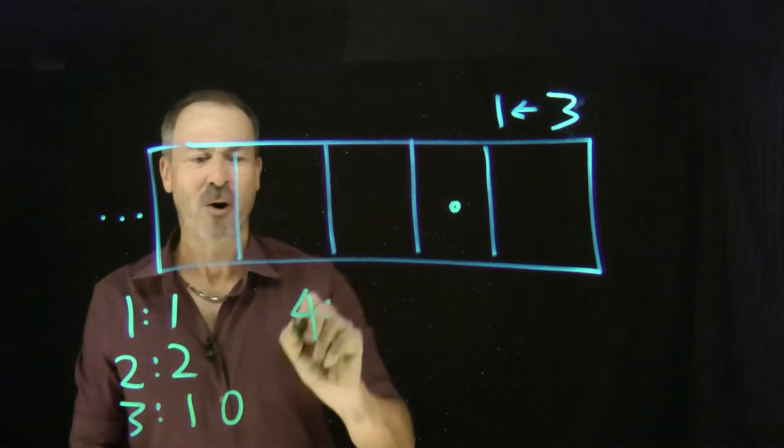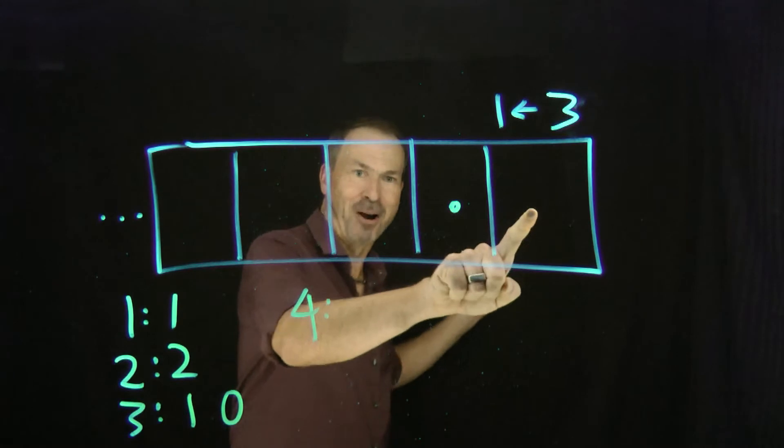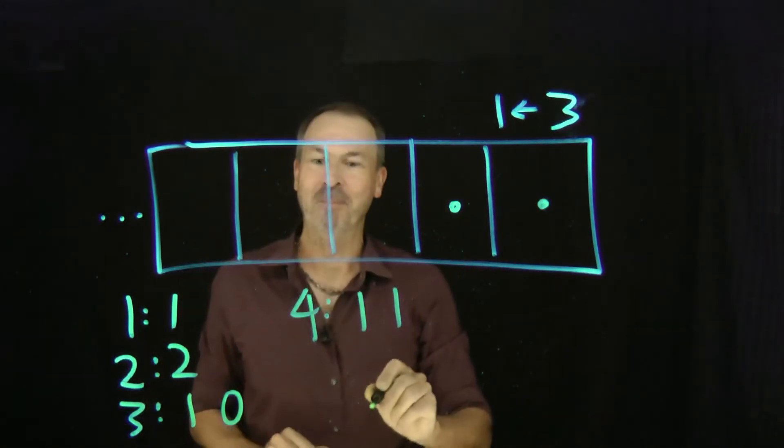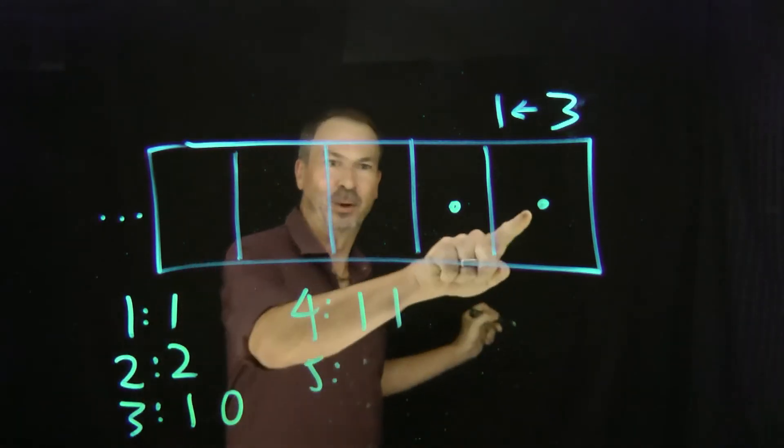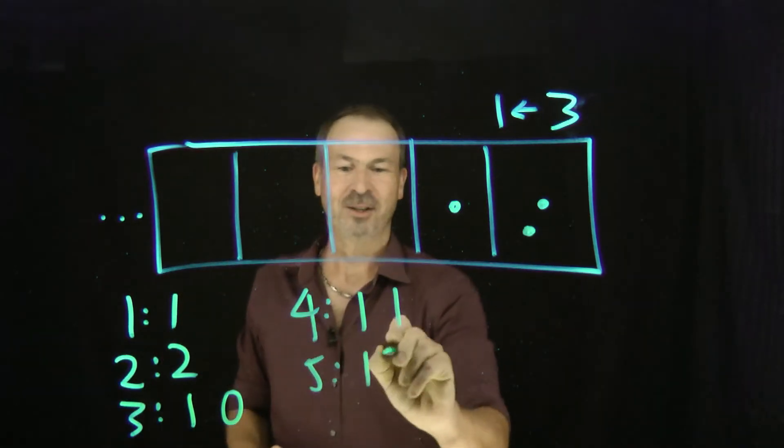Okay, what's the code for four? Here it comes, always the rightmost box. I guess four is one, one. What's the code for five? Always the rightmost box. One, two.